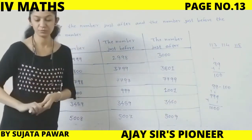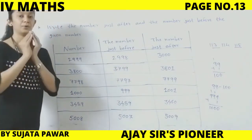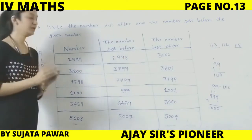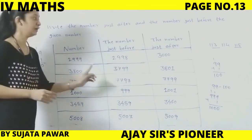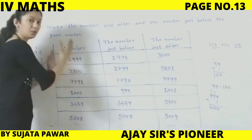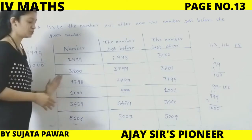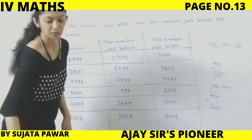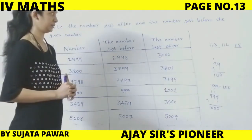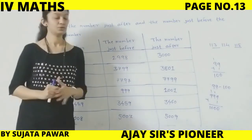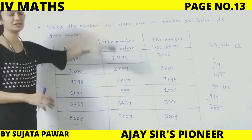Hope you understood, children. Acche se aapko saare numbers ko proper mind mein set karna hai, phir just before — yaane usse pehle kaun sa number hoga — woh likhna hai. Phir just after — bilkul usi number ke baad kaun sa number aata hai — woh likhna hai. Solve this table in your notebook. So our exercise on page number 14 is complete.